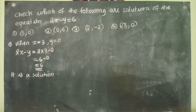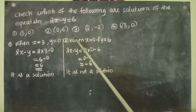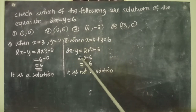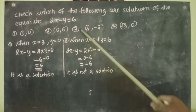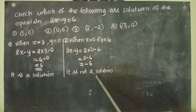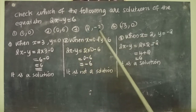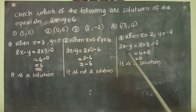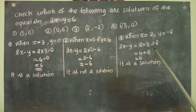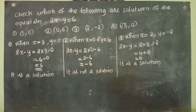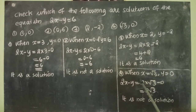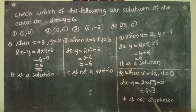Second point (0, 6): when x equal to 0 and y equal to 6, we get 2 into 0 minus 6 equal to 0 minus 6 equal to minus 6. The right side is 6, so it is not a solution. Third point (2, minus 2): 2 into 2 minus (minus 2) equals 4 plus 2 equal to 6. It matches, so it is a solution. Fourth point (root 3, 0): 2 into root 3 minus 0 equals 2 root 3, so it is not a solution.